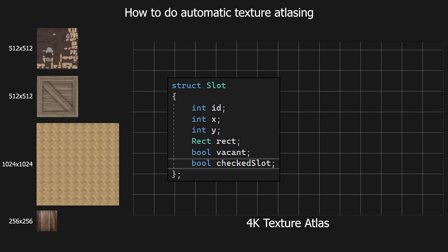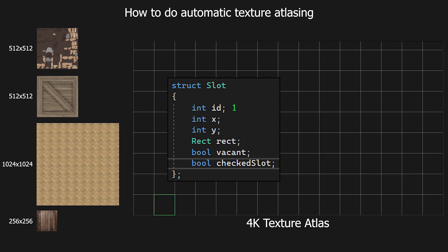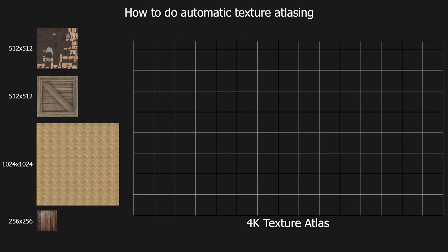Let's see what values should be set for each slot parameter. For slot with index ID 0, the x and y position will both be 0, and the rect will be 0, 0, 256, 256. For slot with ID 1, x will equal 1, y will equal 0, and the rect values will be 256, 0, 256, 256.